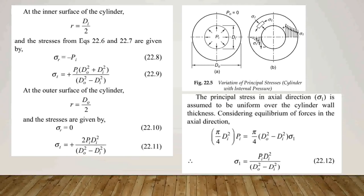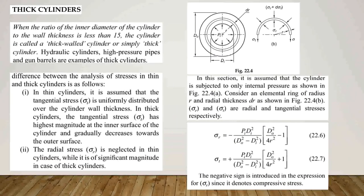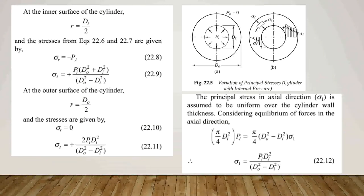For equations 22.6 and 22.7, at the inner surface of the cylinder, we substitute r equals DI divided by 2. We get the values: sigma-r equals minus PI, and sigma-t equals PI times (DO² plus DI²) divided by (DO² minus DI²).